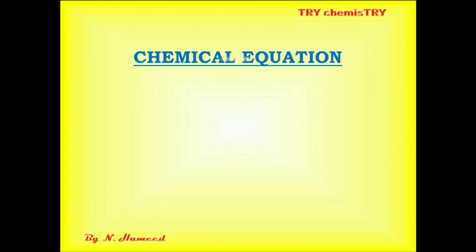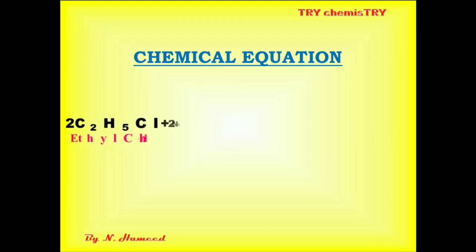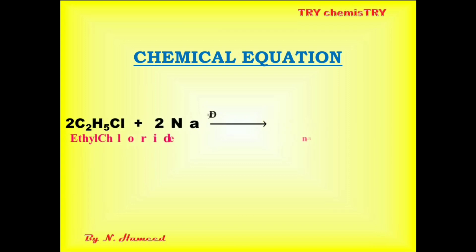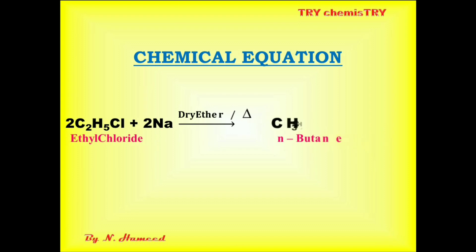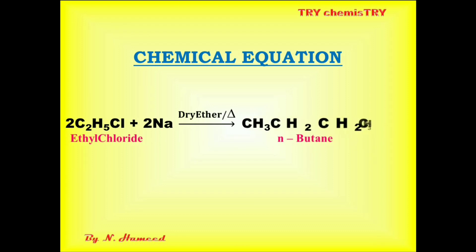Let's see the chemical equation. Two molecules of ethyl chloride react with sodium metal in dry ether solution to give n-butane and two molecules of sodium chloride.